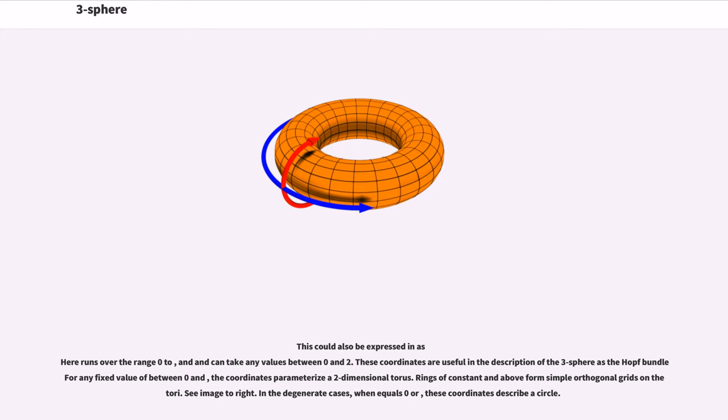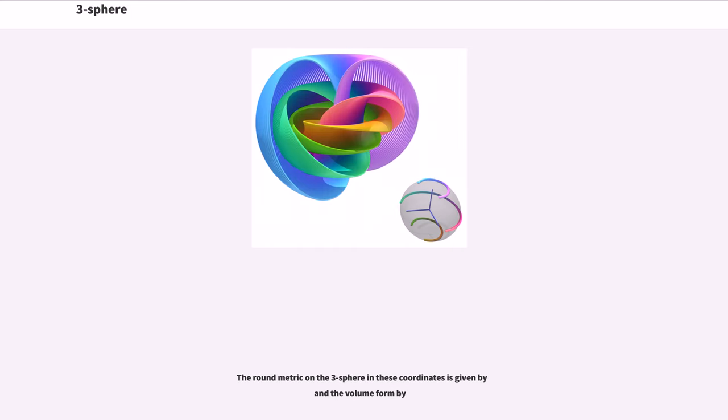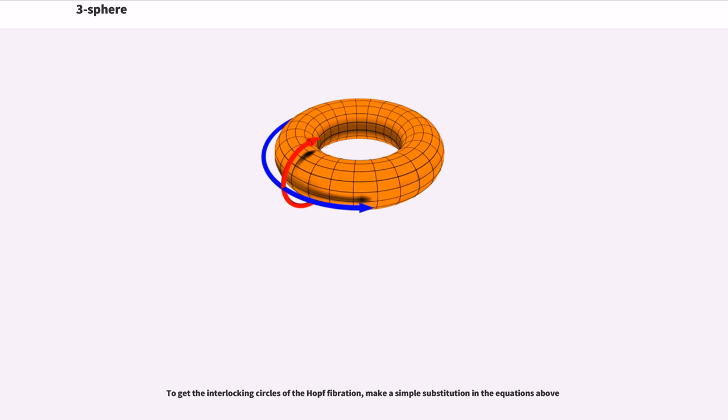the coordinates parameterize a two-dimensional torus. Rings of constant and above form simple orthogonal grids on the tori. See image. In the degenerate cases, when equals zero or pi, these coordinates describe a circle. The round metric on the three-sphere in these coordinates is given by and the volume form by.